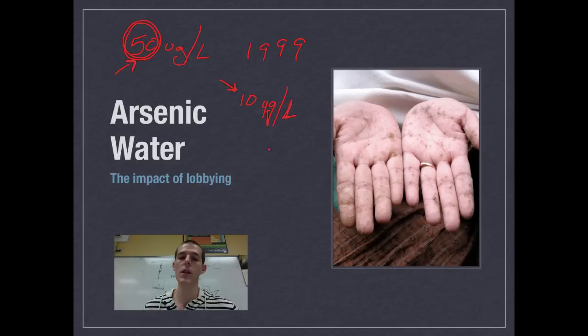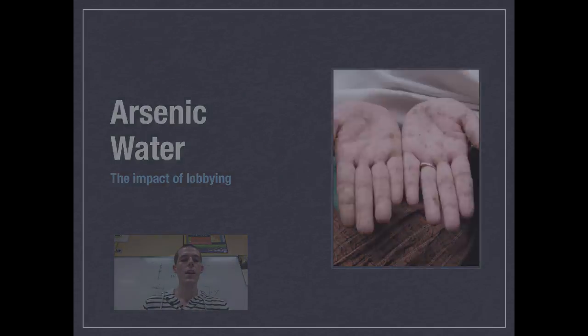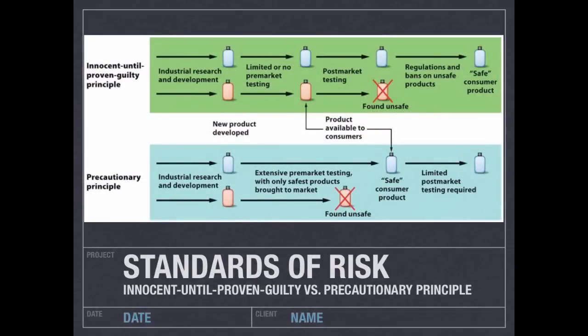There was then a study that came out not too much later that showed concentrations as low as five micrograms per liter can cause significant damage. With this new information, the government finally stepped up and said, we are going to change the regulation to 10 micrograms per liter. So because of the influence of money and business and politics and all that messiness, often getting the legislation process done and setting things at a level that is safe for humans is a very difficult thing to do, which leads nicely into this idea of standards of risk.